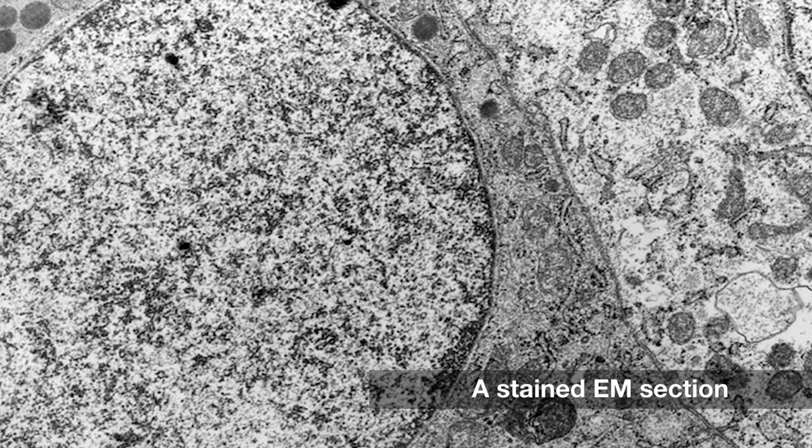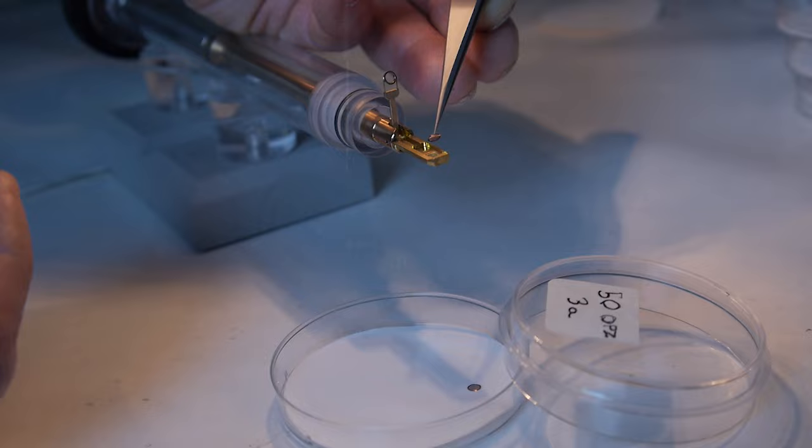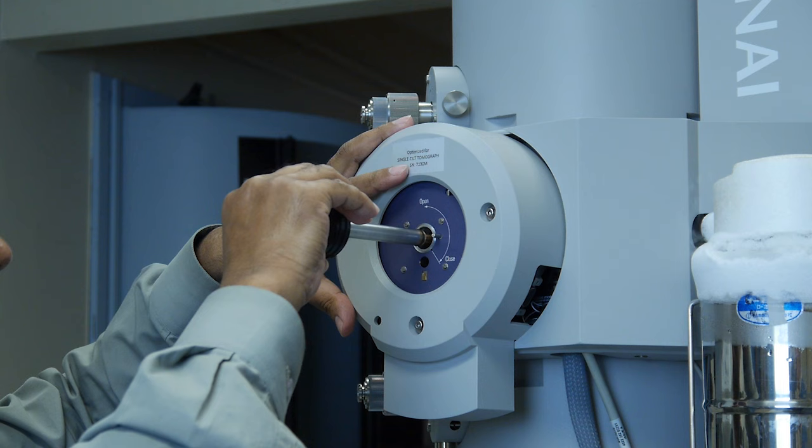This is one of several transmission electron microscopes at Adelaide Microscopy, University of Adelaide. The grid is first placed into the specimen holder and then inserted into the electron microscope.